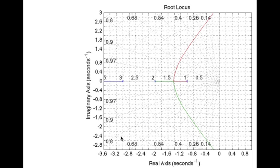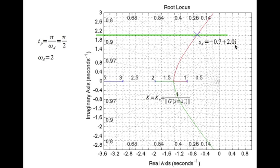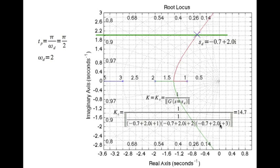Just like previously, we showed this is the root locus of the plant with just the proportional controller. We put in the transient requirements tp equal to π/2, time to peak equal to π/2, that gives me ωd is equal to 2. We mark the ωd equal to 2 line and where that intersects the root locus you get the desired closed loop pole location which is -0.7+2.0i. Then you find the gain, in this case the gain is Kc which is 1 divided by the magnitude of the plant evaluated at s equal to sd, which is 14.7.